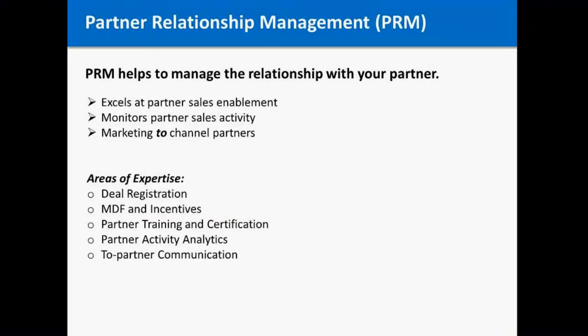PRM is entirely about managing the relationship with your partner. As partner relationship management would imply, it helps you with sales enablement, helps you track that partner's sales activity, and helps your partners understand their sales activity. PRM covers everything from sales tools like deal registration and opportunity management, to marketing areas like marketing development funds and co-op programs, co-branding and incentives. There's also training — delivering training to your partners and managing their certifications, accreditations, and specializations — and giving you as the vendor analytics around partner activity. Understanding what the top 20% of your partners are doing so you can share that behavior with the middle 60% of your partner ecosystem.